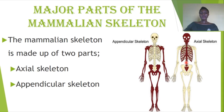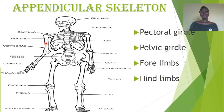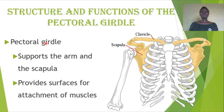The parts forming the appendicular skeleton are: the pectoral girdle, the pelvic girdle, the forelimbs, and the hind limbs. With the pectoral girdle we are looking at two parts that form it — that's our shoulder region.